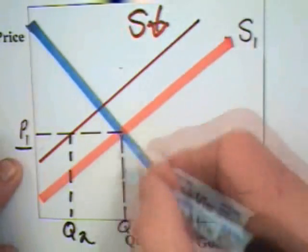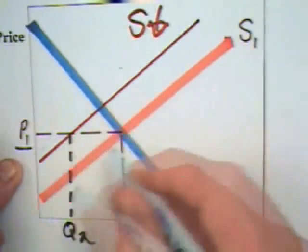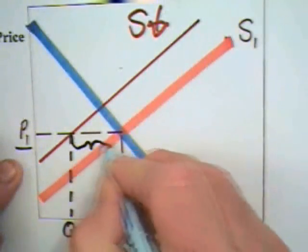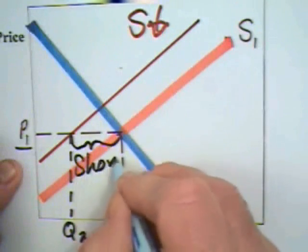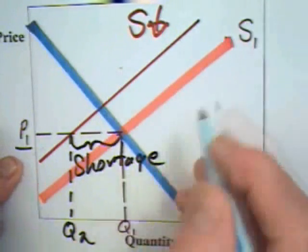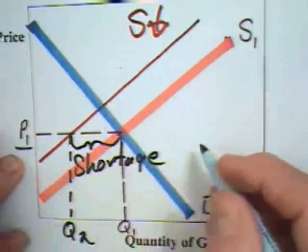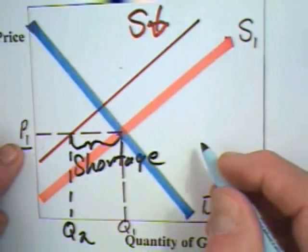In this case, we have quantity demanded greater than the quantity supplied. We have a shortage in the market. As in the past, when you have a shortage, you have upward pressure on the price.